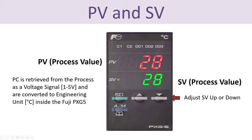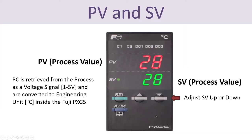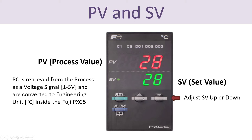When we have done the correct wiring on the back side, we mainly use the front panel to set the set value and read the process value. On top we have the PV or process value, and in the bottom we set the SV or set value. In green we have the set value and in red we have the process value. The process value comes from the process while we set the set value here, and based on that the PID controller calculates a proper control signal and sends it back to the process. We adjust the set point by clicking the up and down buttons.